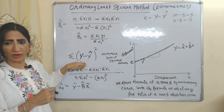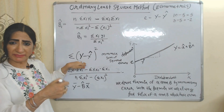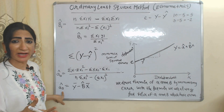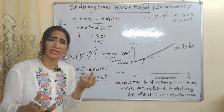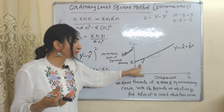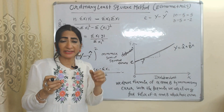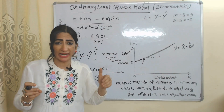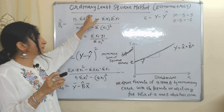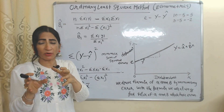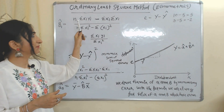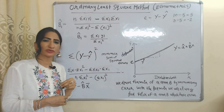With these formulas, we can calculate the best values of alpha-hat and beta-hat, which yield minimum error. If alpha-hat and beta-hat consist of minimum error, then Y-hat will also consist of minimum error. If Y-hat consists of minimum error, that means Y-hat is very close to the actual observed value. This is the main aim of Ordinary Least Squares — to find optimum values of alpha-hat and beta-hat by minimizing overall error. That's all about the Ordinary Least Squares method. Thank you so much for watching this video.